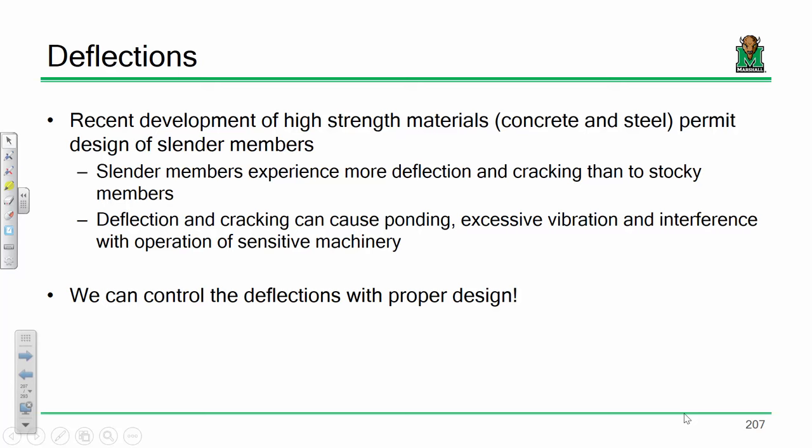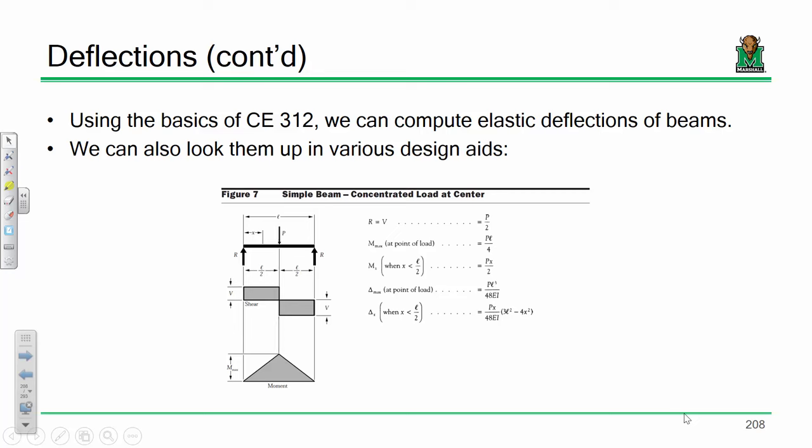Now let's talk about deflections. First, I want to make sure everybody remembers the deflection formulas from CE 312, structural analysis. This is in no way a repeat of structural analysis — I'm not going to make you integrate little m times big M over EI to get a deflection. Mostly we'll be dealing with simple loading scenarios. For instance, a beam with a point load in the middle has a maximum deflection of PL³/(48EI). You all should have the beam design guide I gave at the beginning of the semester — it's also on Blackboard under design aids. It has all the formulas for deflections for basic loading scenarios, and it's also in the steel manual section three.